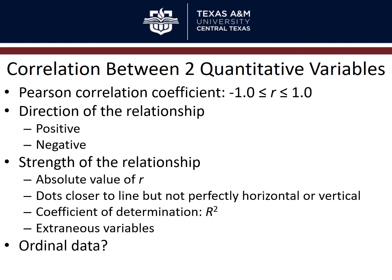Everything discussed so far assumes quantitative data on a ratio or interval scale for a Pearson correlation coefficient. If you have ordinal data — rank-ordered data — you calculate Spearman's rho instead of Pearson's r. But it's interpreted the same way: still ranges from negative one to one, you still calculate r squared as the coefficient of determination.